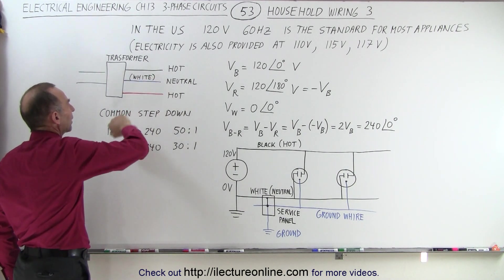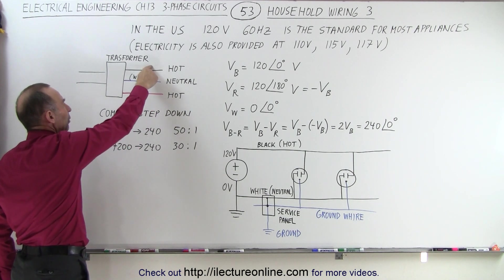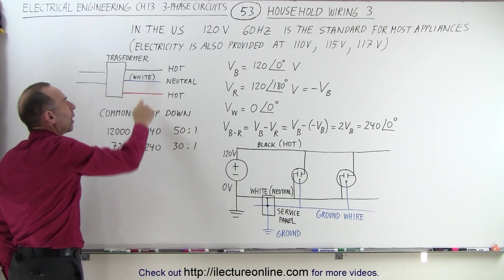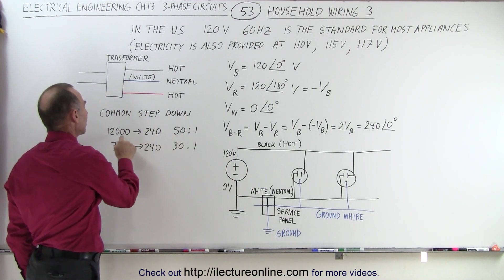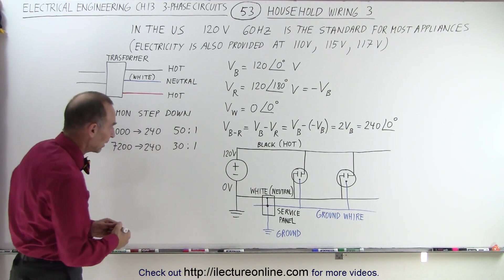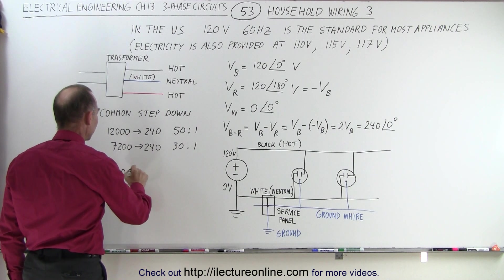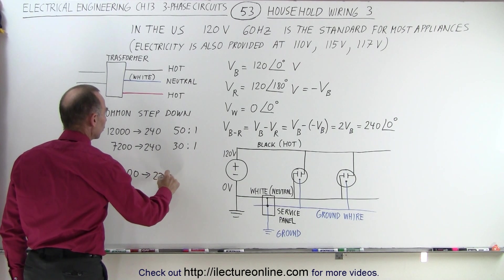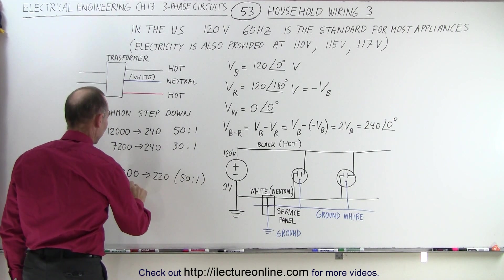Notice we have three wires coming out of the transformer: two hot wires and a neutral, typically a black wire, red wire for the hot, and a white wire for the neutral. The step down is about 50 to 1 when we come down from 12,000 volts and 30 to 1 when we come down from 7,200 volts. Remember that in most other places in the world the step down is from about 11,000 to 220 volts, which is a 50 to 1 step down for the rest of the world.